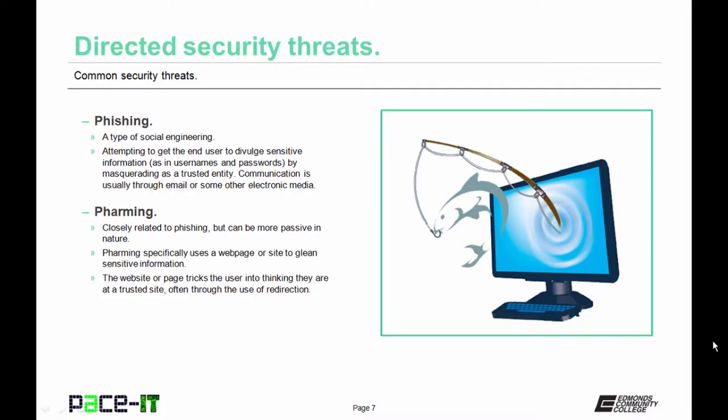Which brings us to pharming. Pharming is closely related to phishing, but it can be more passive in nature. Pharming specifically uses a web page or site to glean sensitive information. The attacker develops a fake website and entices the end user into entering their credentials, and then the attacker gleans that information.